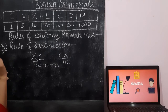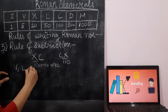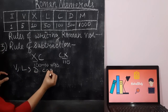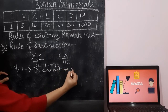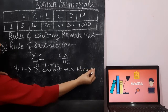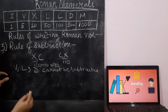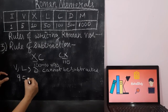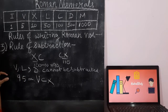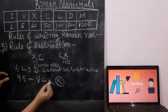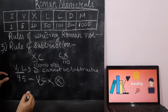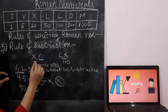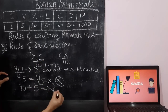There is one more exception: just as V, L, and D can never be repeated, V, L, and D cannot be subtracted either. You cannot write these Roman numerals on the left side of a greater Roman numeral. For example, to write 95, we do not write VCX — that is wrong because V is on the left side. Instead, we write 95 as 90 plus 5. Ninety is represented as XC, so we write XCV.